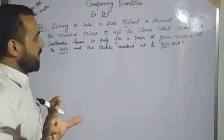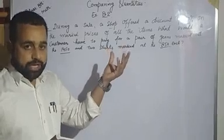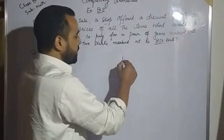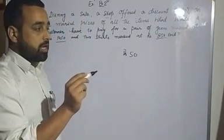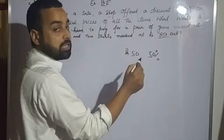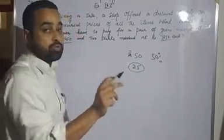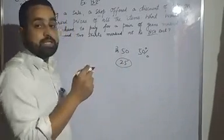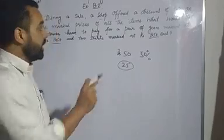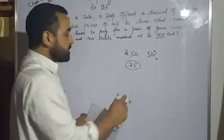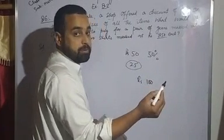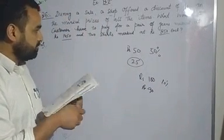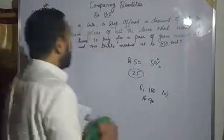The question is simple and easy. A shop has a sale with 10% discount on all items. 10% discount means if an item is 100 rupees, the customer pays 90 rupees. The question asks how much a customer has to pay if they buy jeans and two shirts.